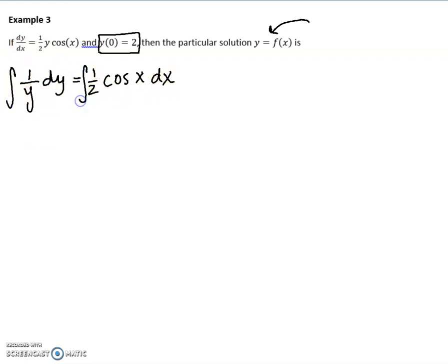So now let's do the integral. The integral of 1 over something is ln of that something, but it is absolute value, so I'm going to introduce that. And then over here, the integral of, I can bring the 1 half out. The integral of cos is sine of x, but don't forget, plus c.